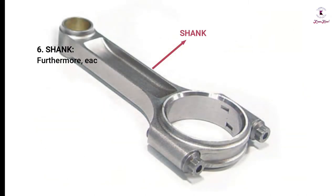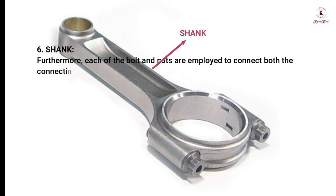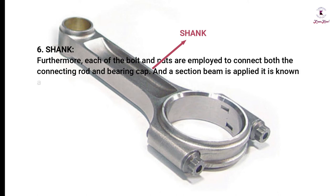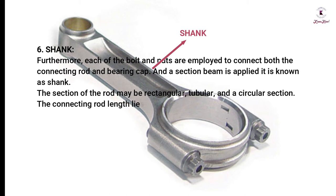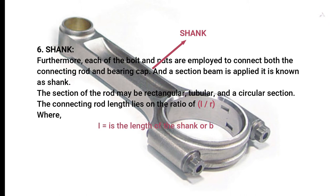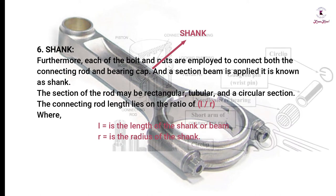Shank: Each of the bolts and nuts are employed to connect both the connecting rod and bearing cap, and a section beam is applied — this is known as the shank. The section of the rod may be rectangular, tubular, or circular. The connecting rod length lies on the ratio of L divided by R, where L is equal to the length of the shank or beam and R is equal to the radius of the shank.